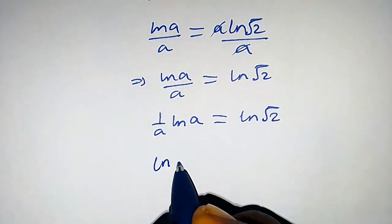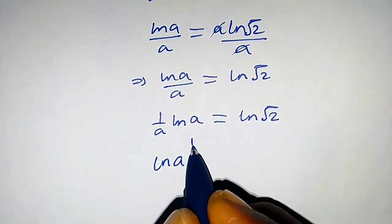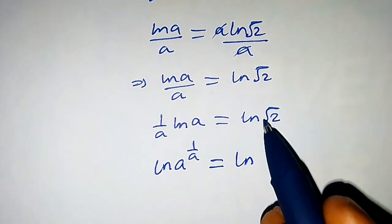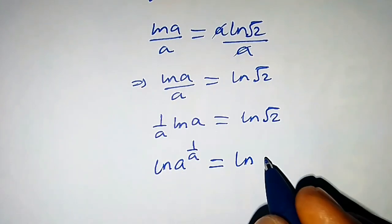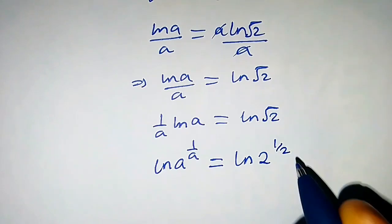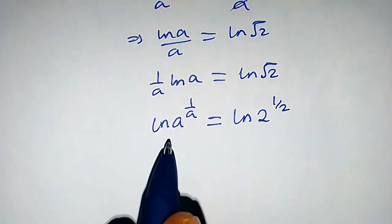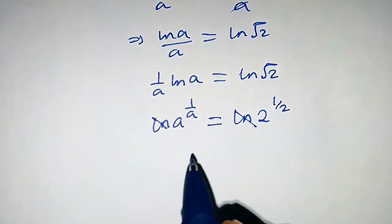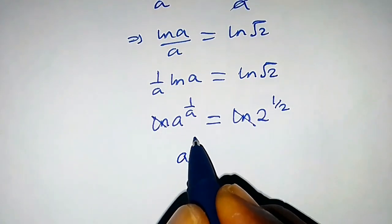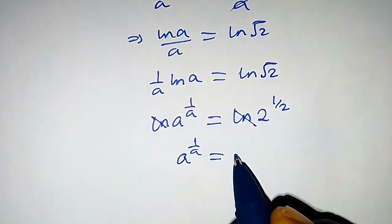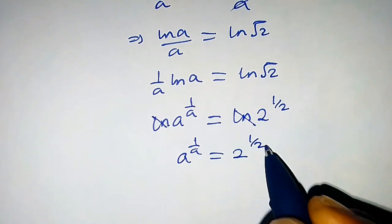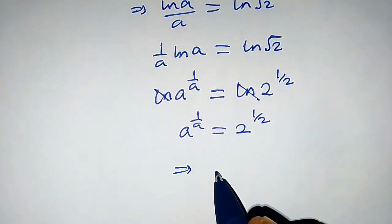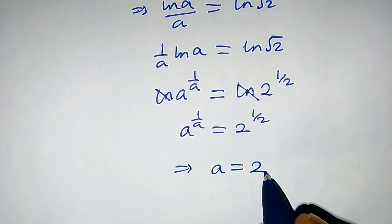Applying laws of logarithm, we get ln of a raised to power 1/a, and this equals ln of square root of 2, which is also the same as 2 raised to power 1/2. Now let's remove the natural logarithm from both sides. We get a raised to power 1/a equals 2 raised to power 1/2.